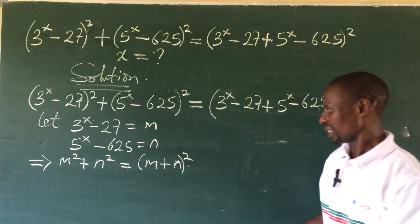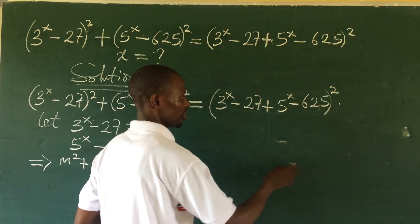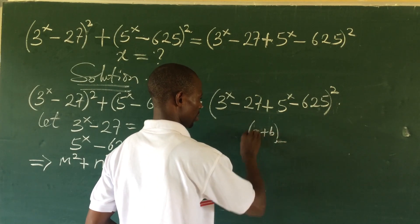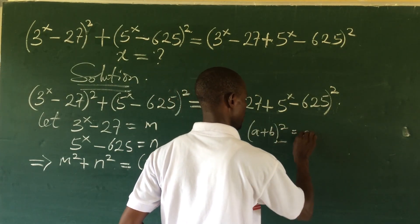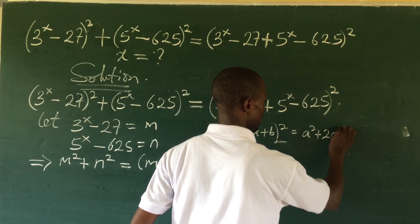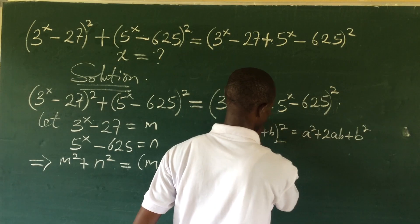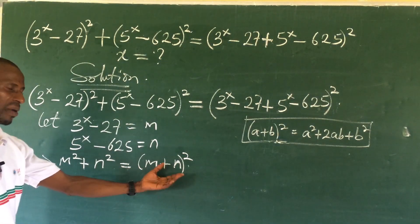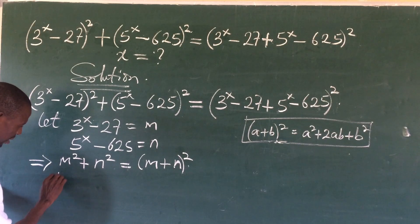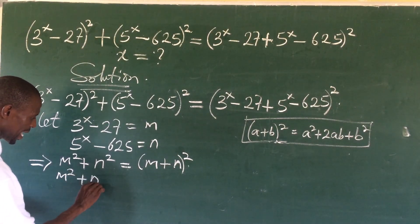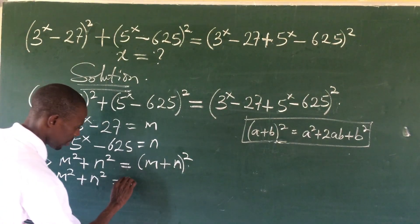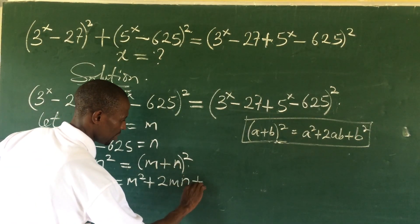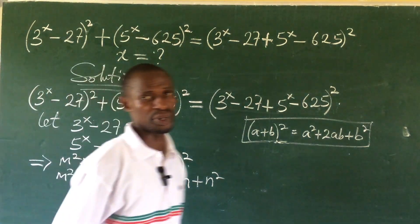Now we have to expand the right-hand side. Remember your algebraic identity: (a + b)² = a² + 2ab + b². Applying this identity, we rewrite our equation as m² + n² = m² + 2mn + n².